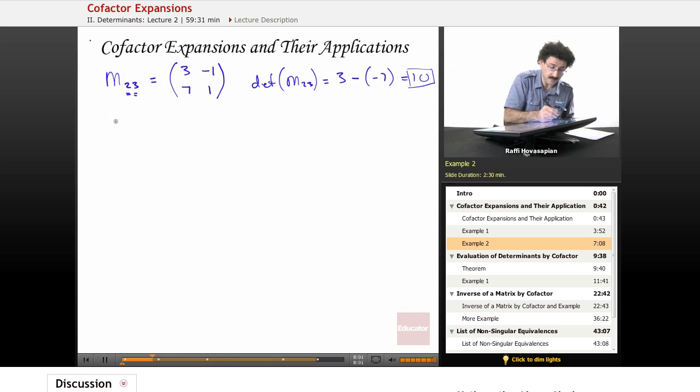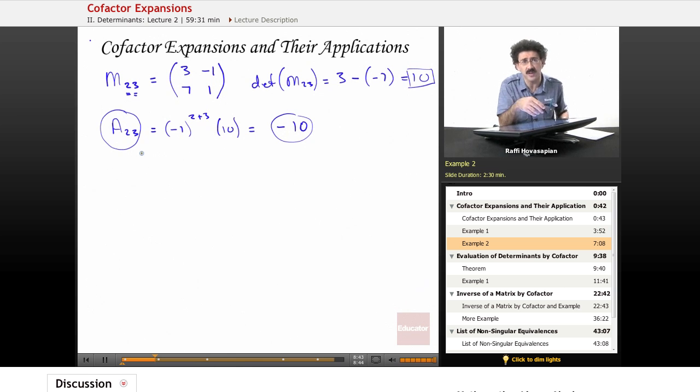And now, our cofactor, A2 3, that's equal to negative 1 raised to the power of 2 plus 3, the row plus the column, times our determinant. Minus 1 raised to the fifth power is minus 1. So, you end up with minus 10. So, once again, we have our matrix, the original matrix. We knock out the second row and third column because we're interested in the M2 3. We have a matrix. We take the determinant of that matrix. And then, from that, we derive something called the cofactor. So, it's the cofactor that's actually going to be the real important thing that we continue to deal with.